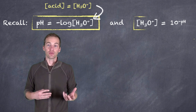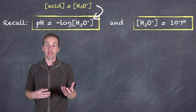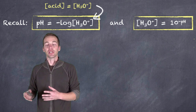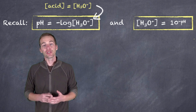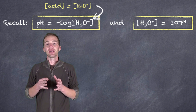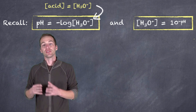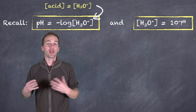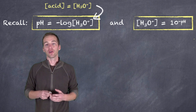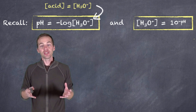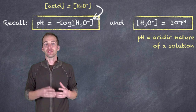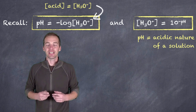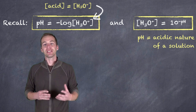We can also use this relationship to establish the hydronium or hydrogen ion concentration of a particular solution if we know its pH, by taking 10 and raising it to the negative exponent of whatever pH we're monitoring. pH tells us the acidic nature of the solution — that is, the acidity of the solution.